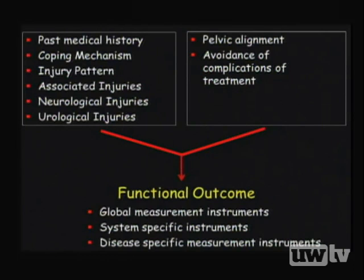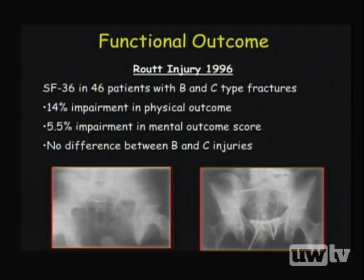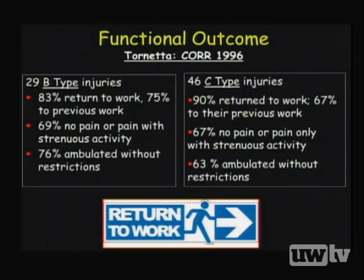Looking at specific outcomes papers: Routon and Twaddle in 1996 assessed 46 patients with B and C type injuries using the SF-36, finding 14% impairment in physical scores and 5.5% impairment in mental scores, with no difference between B and C types. Tornetta published two papers the same year, noting most patients returned to work but many were doing modified work. Most B-type injury patients ambulated without restrictions, while many C-type patients had ambulation restrictions.